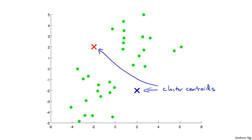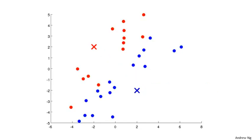The first of the two steps in the inner loop of k-means is the cluster assignment step. What that means is that it's going to go through each of the examples — each of these green dots shown here — and depending on whether it's closer to the red cluster centroid or the blue cluster centroid, it is going to assign each of the data points to one of the two cluster centroids. It's going to go through your data set and color each of the points either red or blue depending on which cluster centroid is closer. So that was the cluster assignment step.